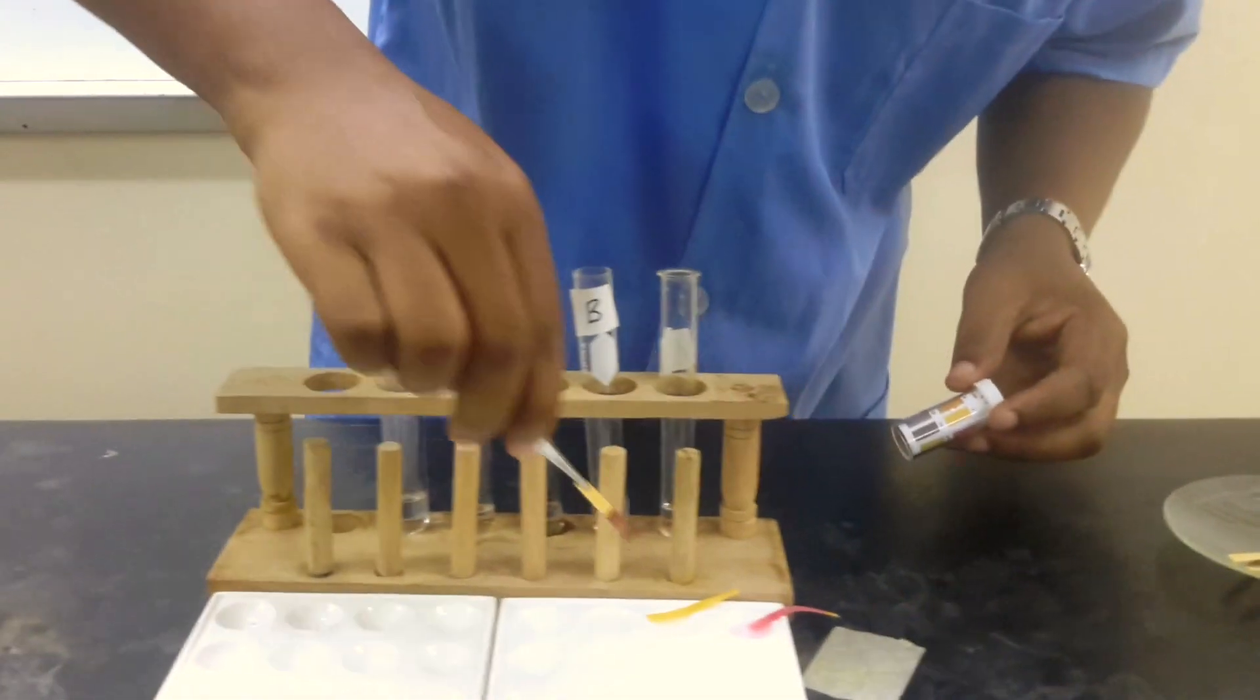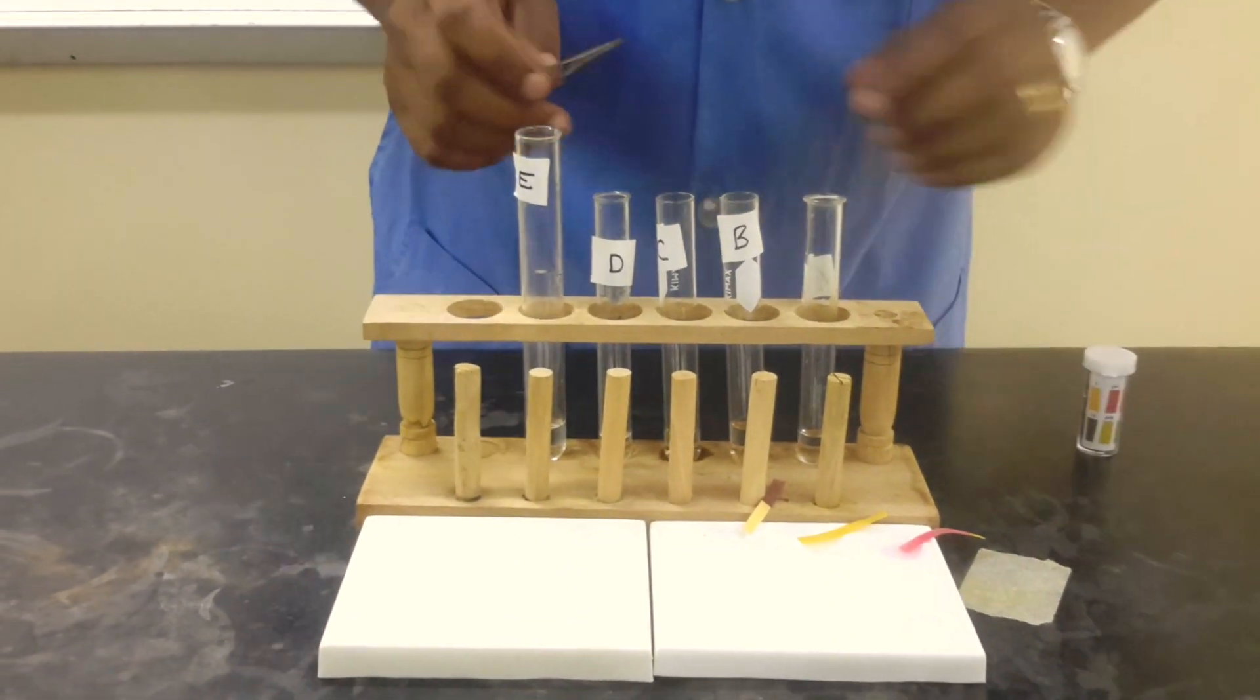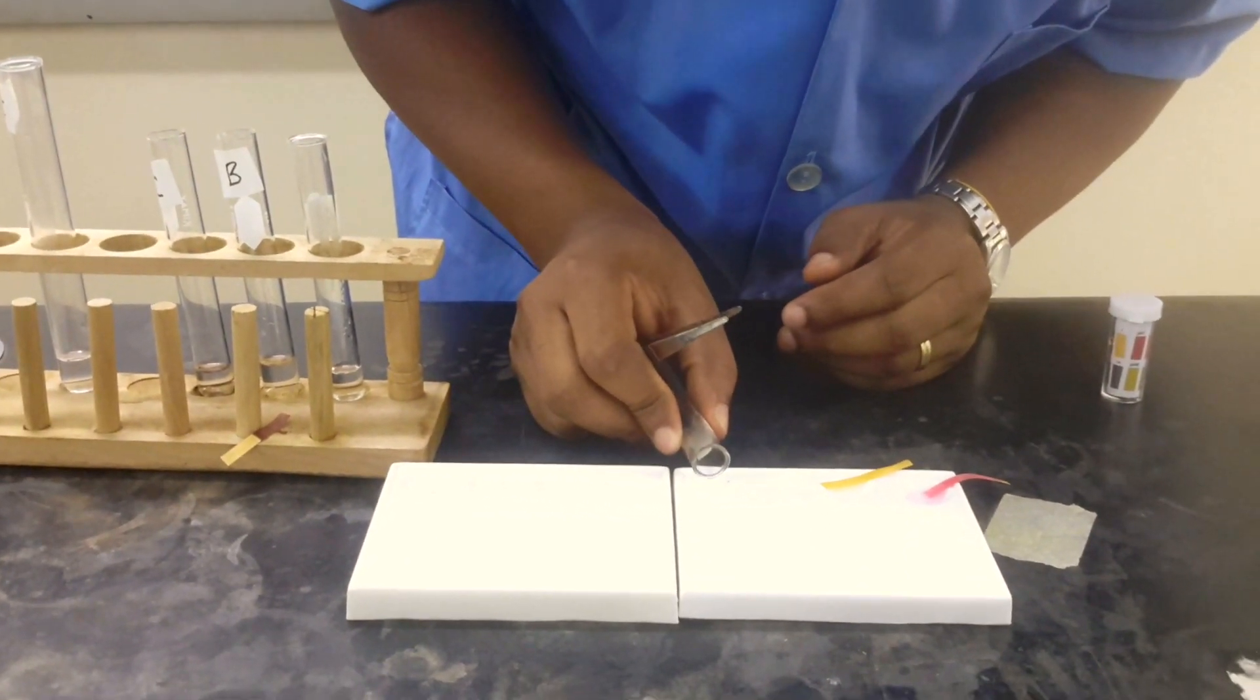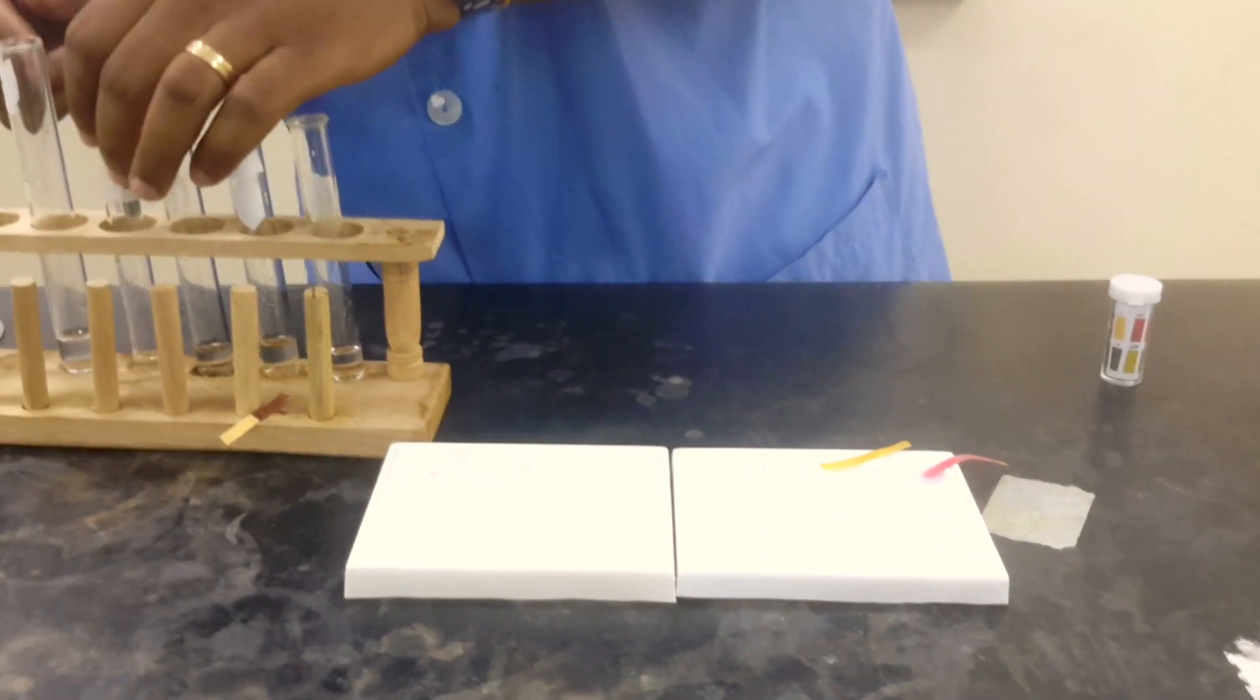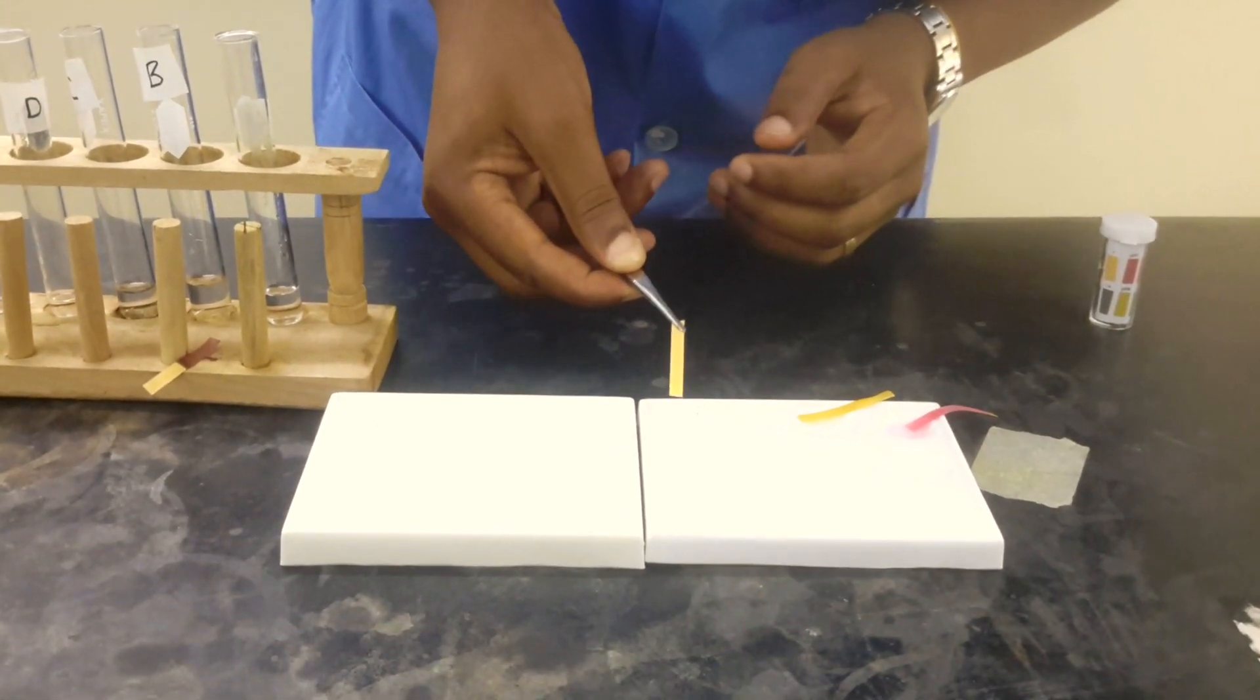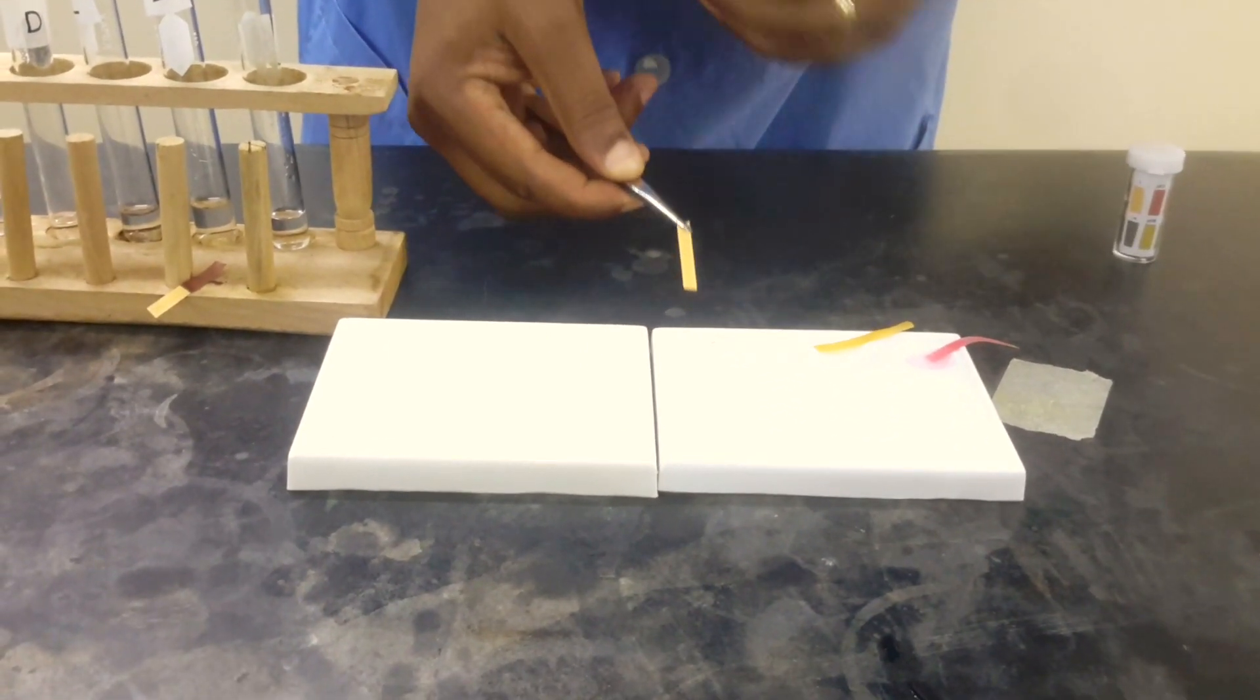We'll keep going. That was C. So this is now D. We'll just pour a little of D, and careful not to touch the strip with my hands because that could contaminate the strip, especially if my hands have chemicals on it.